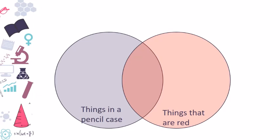This is the categories that I put: things in a pencil case and also things are red. Of course, things in pencil case usually comes also in red, so we put it in the middle. Let's take a look at the first object. What is it? Yes, a sharpener. Where does the sharpener belong? Is it red? No. But is it in a pencil case? Yes. So we put it in a pencil case.